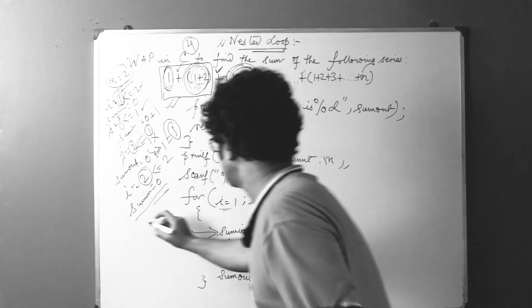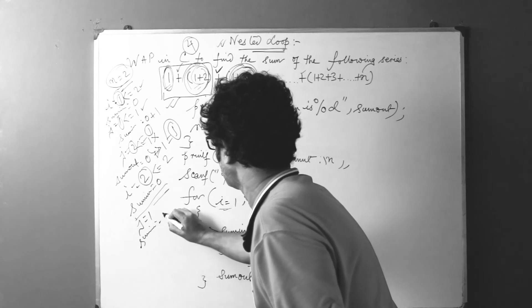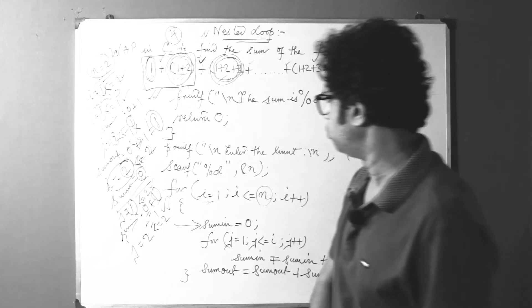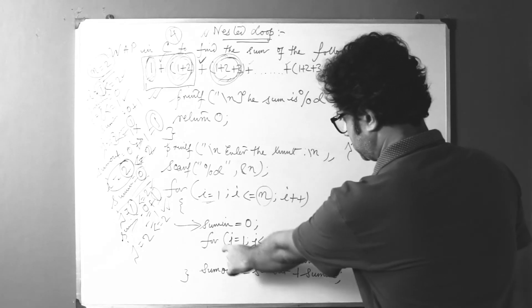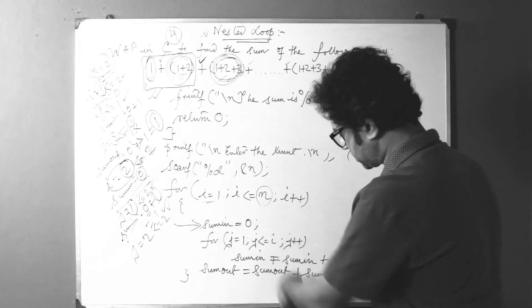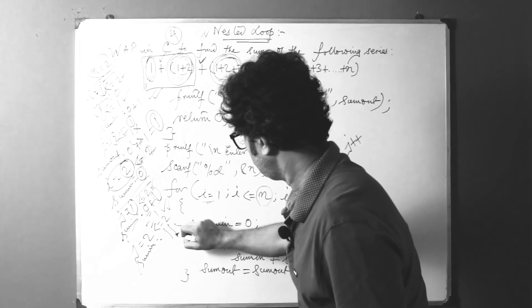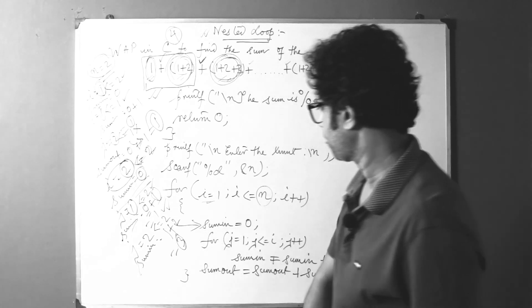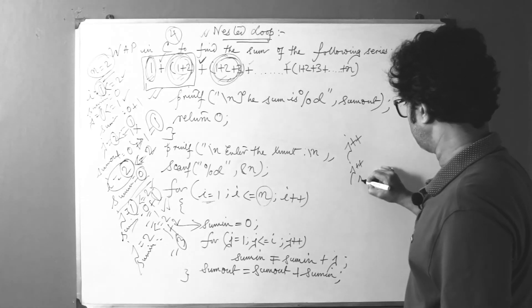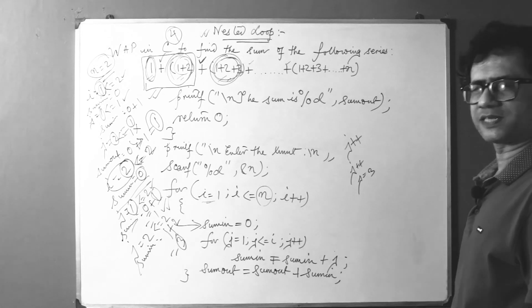sum_in = 1 + 2 = 3. Then j++ gives j = 3; 3 is not less than or equal to 2, so we exit the inner j loop.